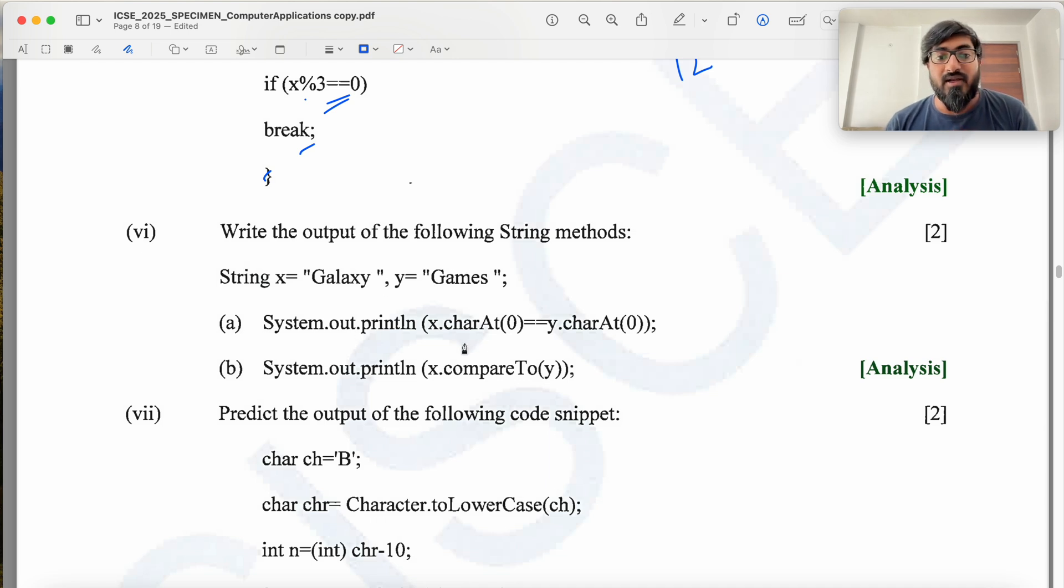Write out the output of the following string methods. Println X dot charAt 0 equal to Y dot charAt 0. Equal to is a relational operator, returns a boolean value true or false. X dot charAt 0 is uppercase G, Y dot charAt 0 is uppercase G, so this returns true. Then we have X dot compareTo Y. CompareTo compares two strings character by character. This character is same, moves on to the next character, then moves on to the character that has the difference which is L and M. The return value is ASCII value of first character minus ASCII value of second character, so L minus M. L and M are next to each other in alphabetical order. L has lower ASCII value, M has higher by one. So L minus M will give you minus one.